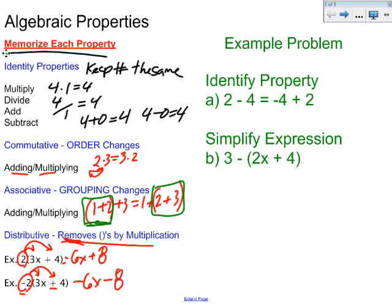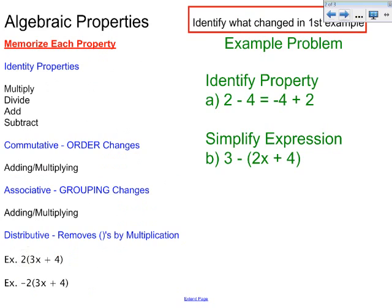Now we're going to look at the first example. So in this case, this is kind of a tricky one. It says 2 minus 4 equals negative 4 plus 2. You should look at the numbers differently. So read them as positive and negative. So that's a positive 2 and a negative 4. Then a negative 4 and a positive 2. So in this case the order changed from one side to the other. So since it's order, it's the commutative property. Keep in mind this is the commutative property of addition.